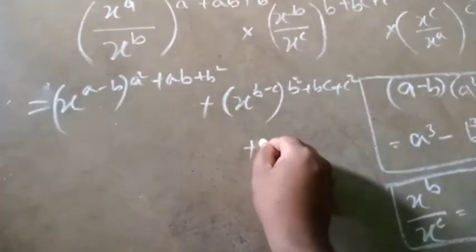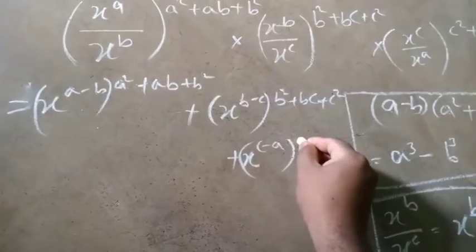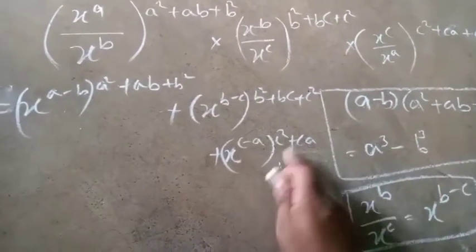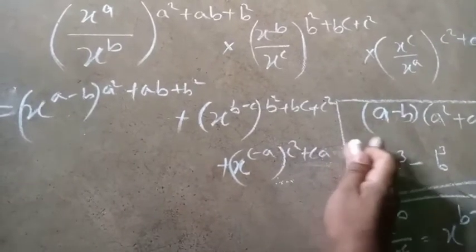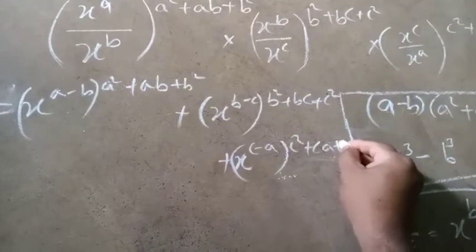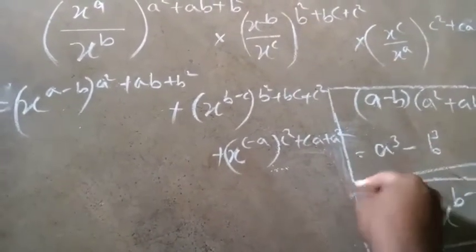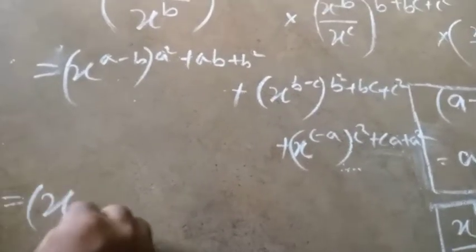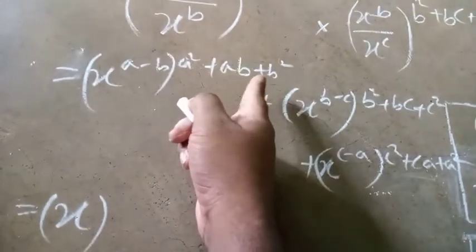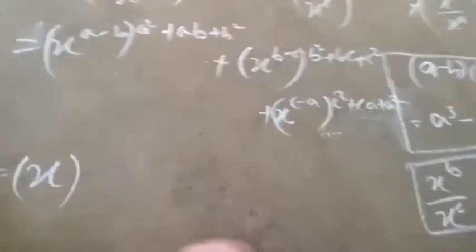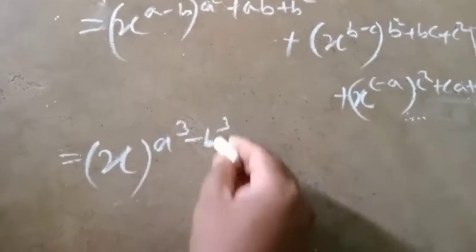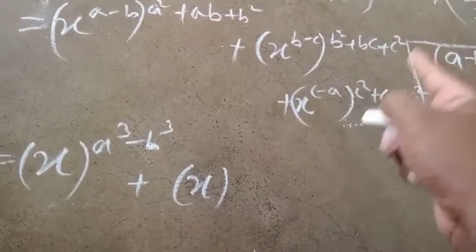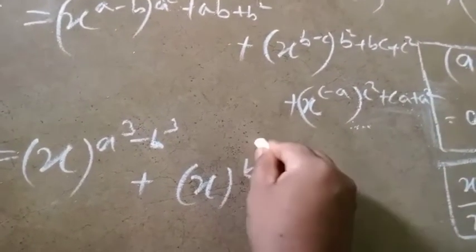Then, the plan is what we call x to the power c minus a, whole to the power c squared plus ca plus a squared. Then, applying the formula, we call x to the power b minus c whole into b squared plus bc plus c squared, so that is what we call x to the power b cubed minus c cubed.